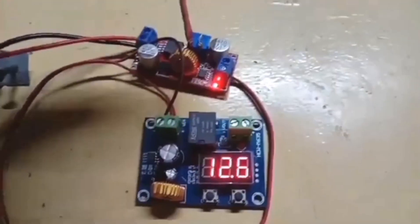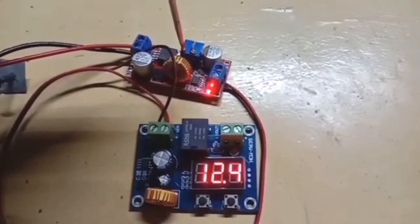See the load shut off when voltage goes to 12.7.